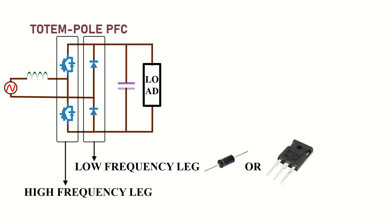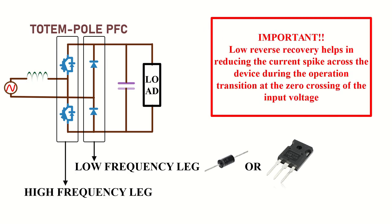In the high frequency leg, we need to use devices which have very low reverse recovery. So normal silicon MOSFET cannot be used. Normally silicon carbide or gallium nitride devices are used in totem pole converters, since these devices offer nearly zero reverse recovery.